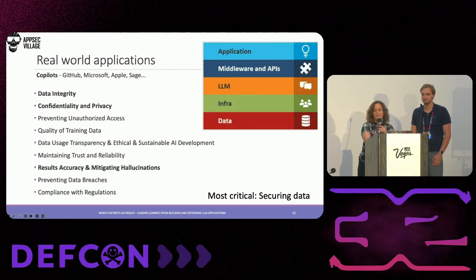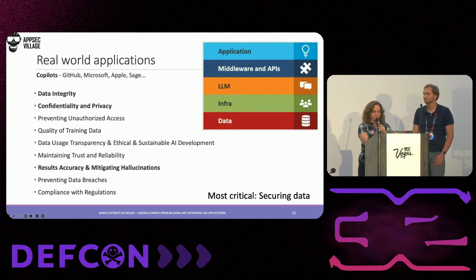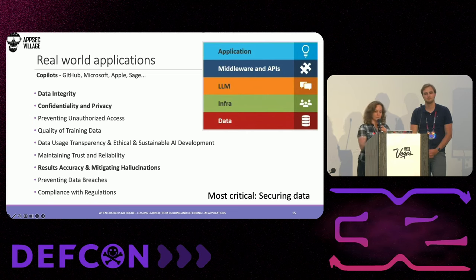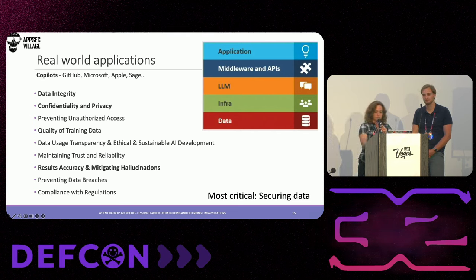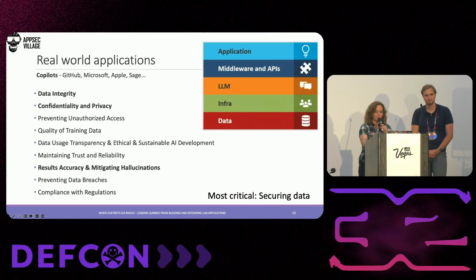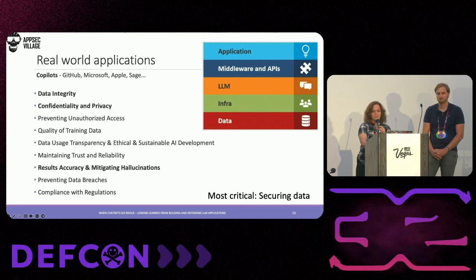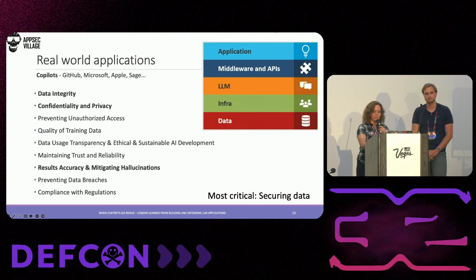Data is the foundation of all LLM-enhanced apps, and securing it is crucial. There are a few key aspects we've been discussing with our development teams. Data integrity is critical — corrupted or manipulated data can lead to incorrect outputs and potentially cause harm. Confidentiality and privacy are important for compliance with standards and regulations. And results accuracy and mitigating hallucinations matter greatly — in our case, we have an accounting-related chatbot where accuracy and reliability are paramount.